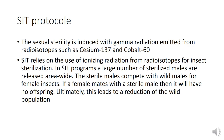Sexual sterility in SIT is induced with gamma radiation emitted from radioisotopes such as cesium-137 and cobalt-60. In SIT, a large number of sterilized males are released into an area where the sterile males compete with wild males for female insects. If a female mates with a sterile male, it will have no offspring.